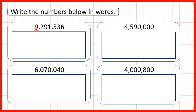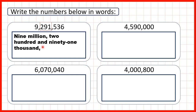So first we can look at the digit written before the first comma. We have a nine, so we can write nine million. Then we look at the three digits between the commas or spaces. We have two hundred and ninety-one, so we have two hundred and ninety-one thousand.